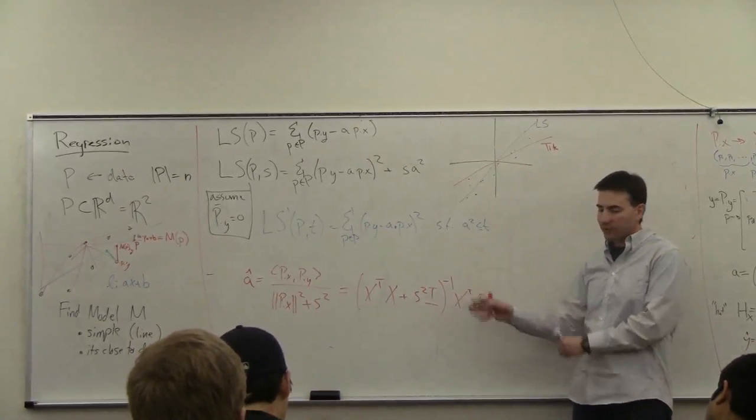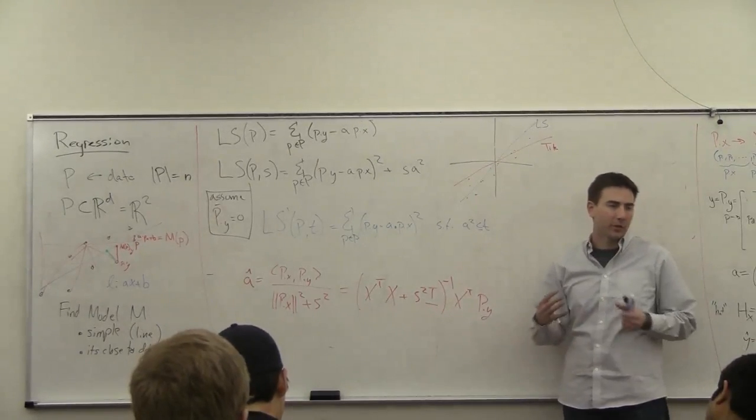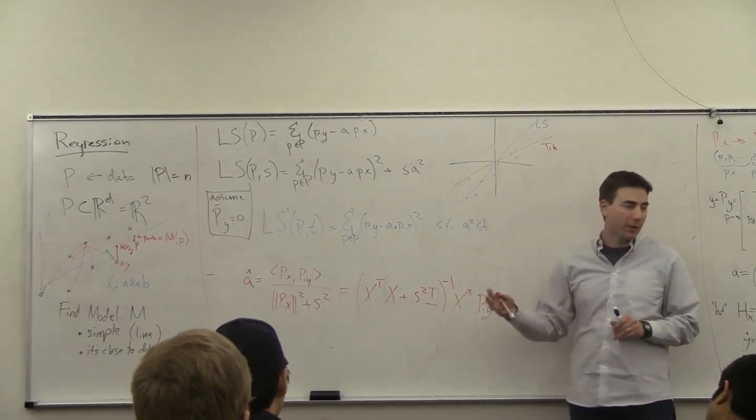And so this solution, it's just as easy as solving the least squares problem. You just have this extra term here. And this will bias you away from these outliers.